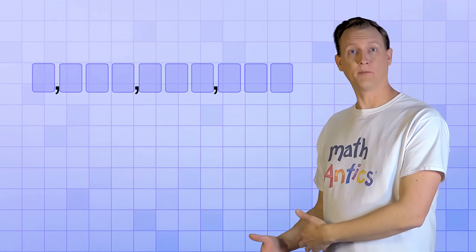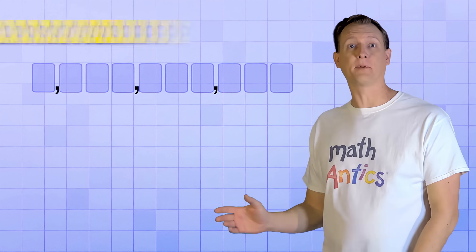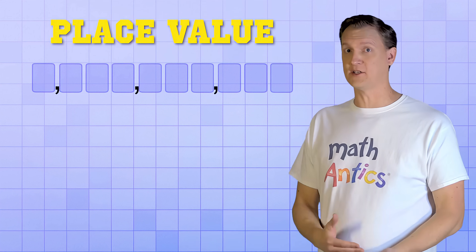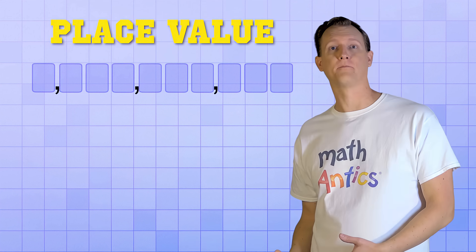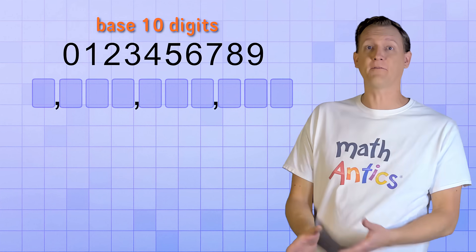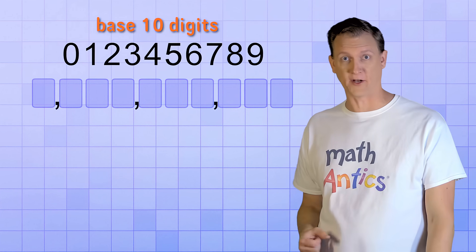Seeing all these number places together helps you understand what we mean by place value. In a multi-digit number, the number place that a digit is in determines its value. Even though we only have 10 digits, each digit can stand for different amounts depending on the place that it occupies.